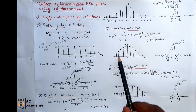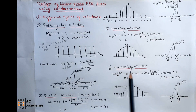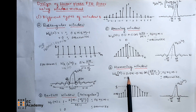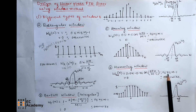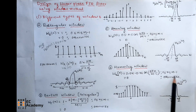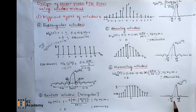This is the time domain representation and the spectral representation of the Hanning window. The next type of window is the Hamming window, given as WH(N) = 0.54 − 0.46·cos(2πN / (M−1)) for N ranging from 0 to M minus 1, and 0 for other values of N. This is the time domain and spectral representation of the Hamming window. Comparing the two time domain representations, the Hanning window commences from 0, while the Hamming window commences from 0.08.